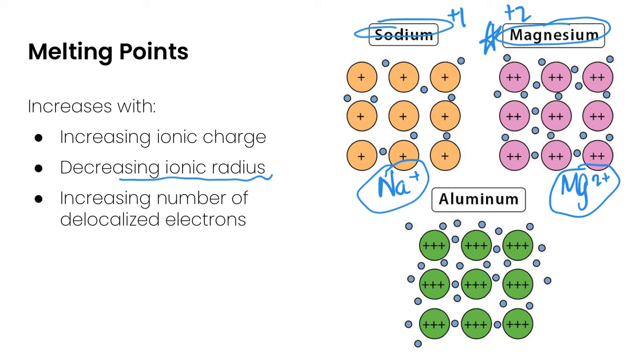Finally, melting points will increase with the increasing number of delocalized electrons. And so we have stronger electrostatic attraction with more electrons. Taking a look here in our pictures, our aluminum is going to have more delocalized electrons than either of the two. So an aluminum metal would have a higher melting point than either magnesium or sodium.